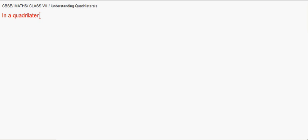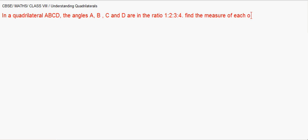First question. In a quadrilateral which is named as ABCD, the angles A, B, C and D, they are in the ratio 1 is to 2 is to 3 is to 4. We have to find the measure of each angle of the quadrilateral.